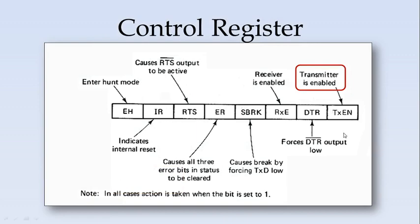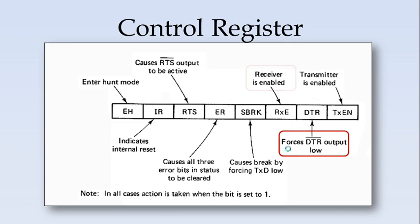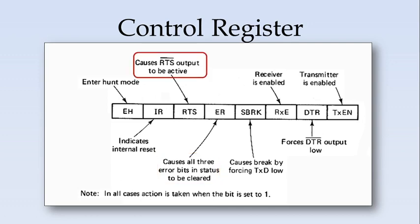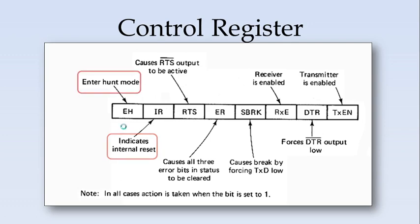Next is the control register. One bit indicates the transmitter is enabled and another indicates data terminal ready. A bit indicates the receiver is enabled, controlling whether reception or transmission is enabled. Another bit causes a break by forcing the transmit data pin low. A bit clears all three error bits in the status register. RTS stands for request to send, used for modem handshake signals. Another bit indicates internal reset. Finally, a bit indicates the enter-hunt mode, which is used in synchronous mode where the 8251 is looking for the sync characters to identify the start of transmission.